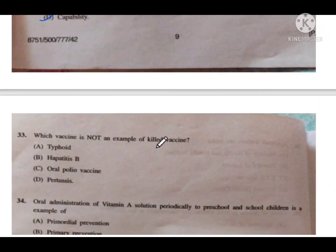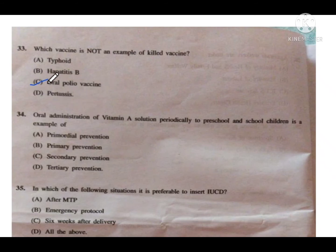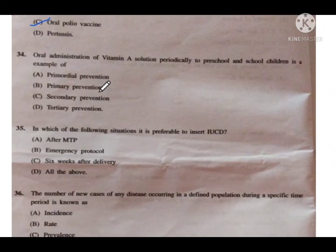Question number 33: Which vaccine is not an example of a killed vaccine? Options include typhoid, hepatitis B, oral polio vaccine, and rabies. Option C — oral polio vaccine — is the correct answer, as OPV is a live attenuated vaccine, not a killed vaccine.